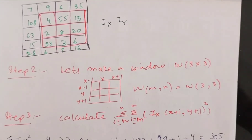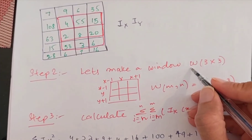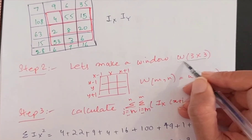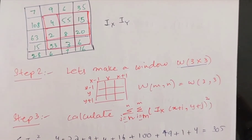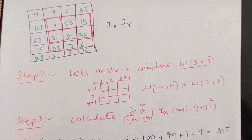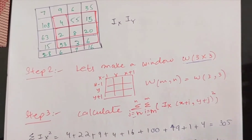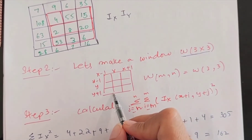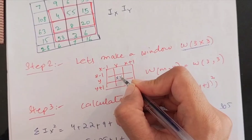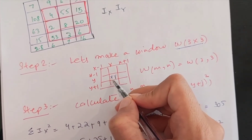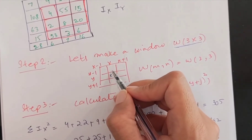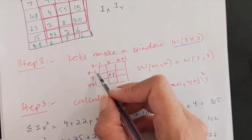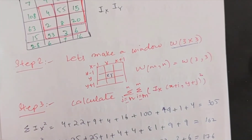In step two, I will make a window. It can be specified in the question, or you can do it yourself. Let's assume we are making a window of 3x3. In the question you might be asked to make a window of 5x5, but if it is not specified, for simplicity I will use 3x3. The center pixel of the window is at position (x, y), with x-1 behind it and x+1 after it. Similarly on the y-axis, y-1 is behind and y+1 is after.